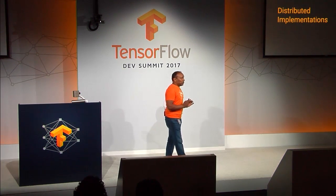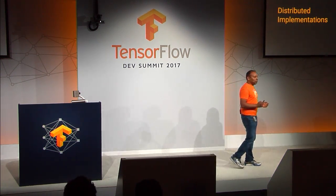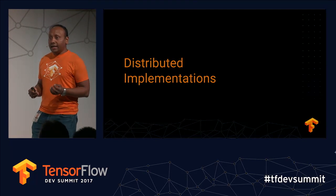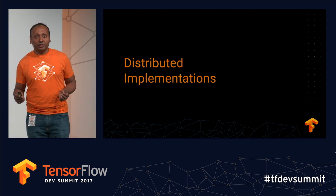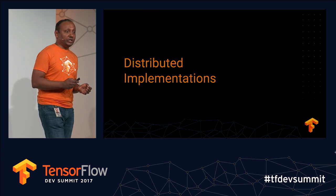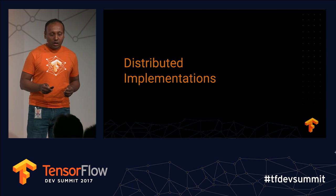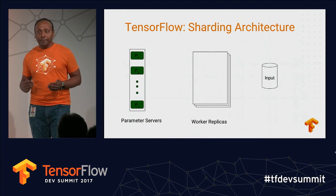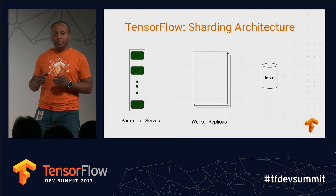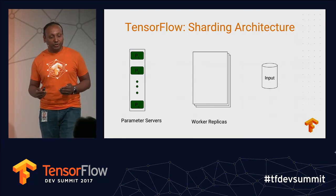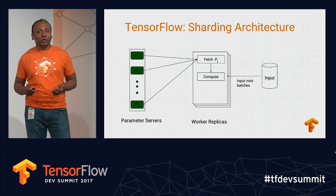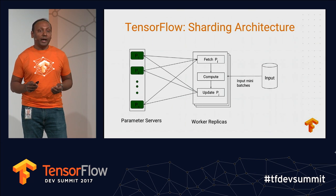All these algorithms are backed by distributed implementations. To give you a better sense of the complexity behind these few lines of Python code, the general distribution architecture has a set of parameter servers storing all parameters in a sharded way, and a bunch of worker replicas running training steps over many batches of input. In each step, a worker replica fetches some parameters, runs compute on the input to compute new parameter values, and writes back those updates to the parameter server.